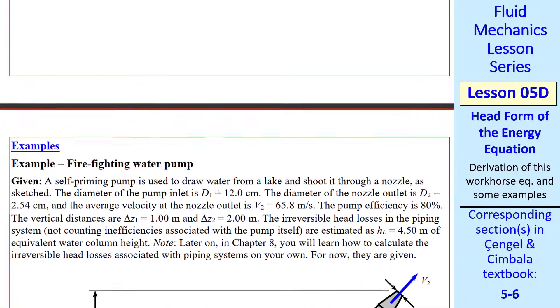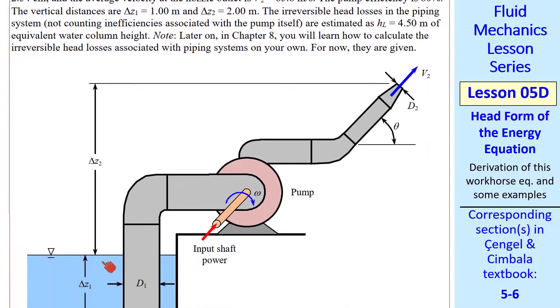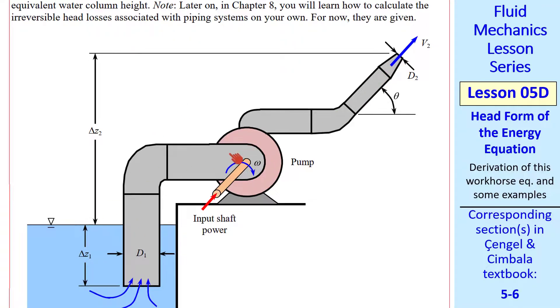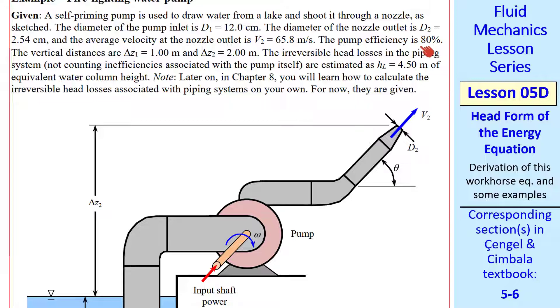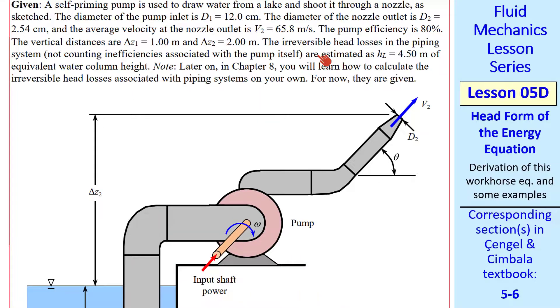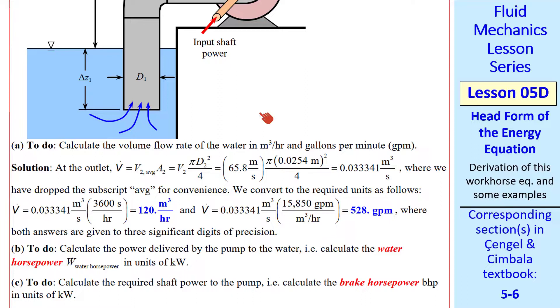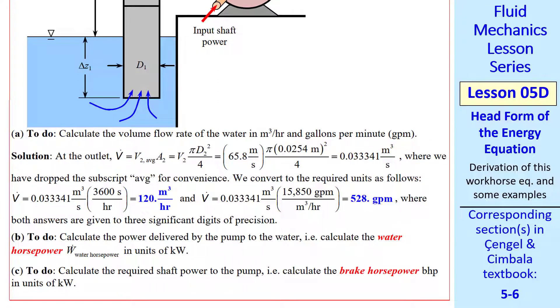For our first example, let's look at a firefighting water pump. We have a self-priming pump, which means you can stick it in the water, and it'll draw water in without having to prime the pump. We draw water from this lake and shoot it out through the nozzle. Of course, there's a pump with some input shaft power. There's also an elevation increase. We give the pipe diameters, the average velocity at the outlet, and the pump efficiency, which is 80%. We also give these vertical elevation changes, delta Z2 and delta Z1. At this point, I'm going to give you the irreversible head losses. These losses are due to friction in these pipes, and there are additional losses through elbows and nozzles, which we'll learn how to estimate in chapter 8 in the Cengel symbolic fluids book. And you'll be able to calculate these irreversible head losses on your own. For now, I'll give them as 4.50 meters of equivalent water column height.